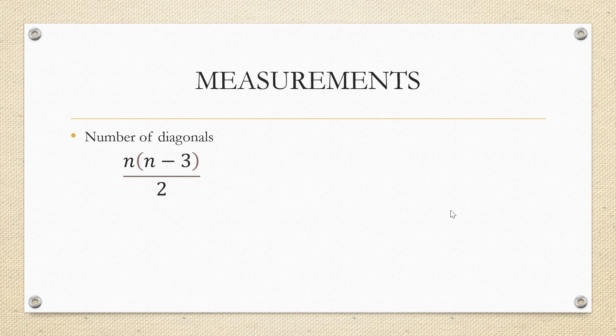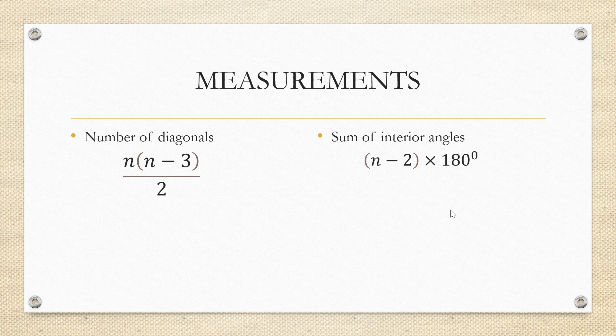Similarly, to calculate the sum of interior angles, n minus 2 into 180. Consider a triangle with three sides. In that case, 3 minus 2 into 180. That is, 1 into 180 is nothing but 180. Sum of angles in a triangle is 180.